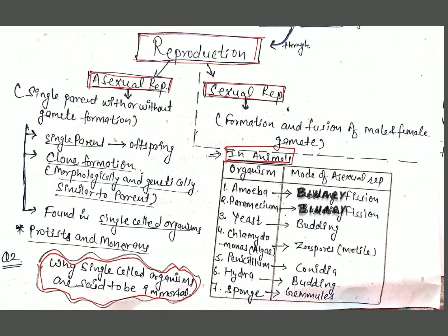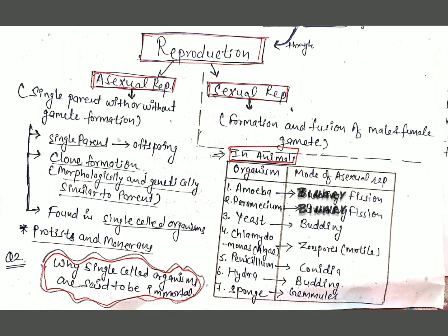Reproduction is of two types based on whether there is participation of one parent organism or two. When a single parent is involved it is known as asexual reproduction; when two parents are involved and there is the formation and fusion of male and female gametes, it is known as sexual reproduction. In asexual reproduction: a single parent produces offspring, clones are formed because offspring are morphologically and genetically similar to their parents, and this type of reproduction is found in single-celled organisms like protists and monerans.